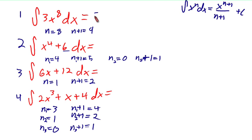Pulling the 3 out of the front and then plugging everything into our formula gives us x to the 9th divided by 9 plus c. And because this will simplify the 3 and the 9, we're going to get 1/3 x to the 9th plus c is our answer.